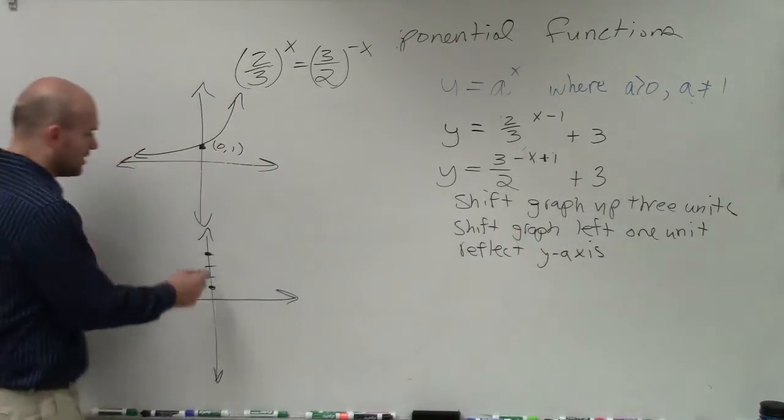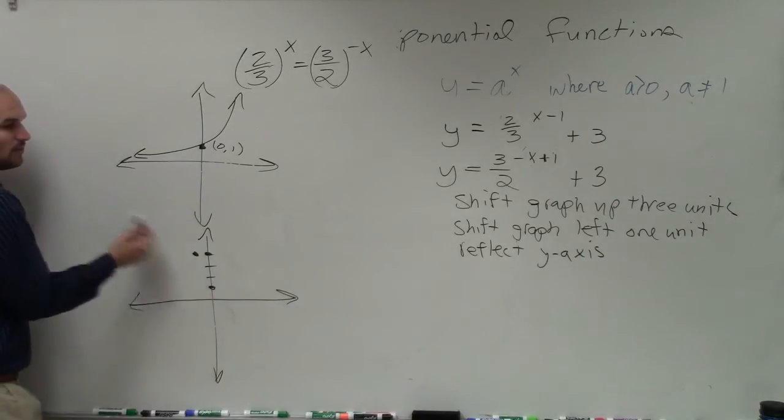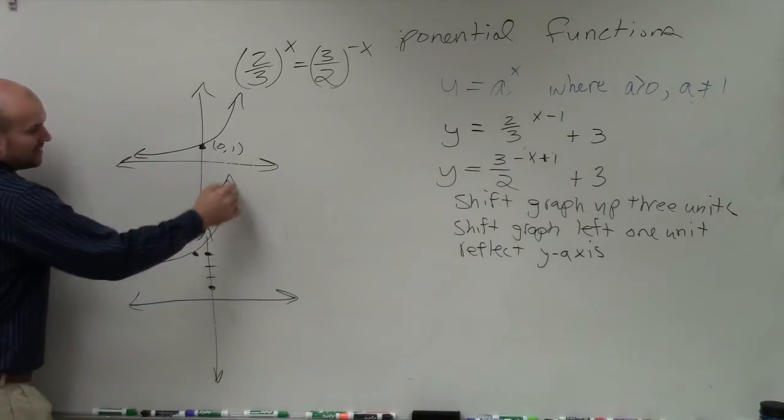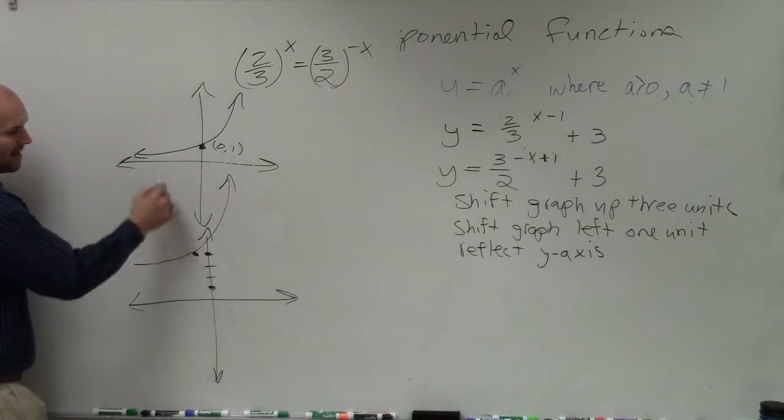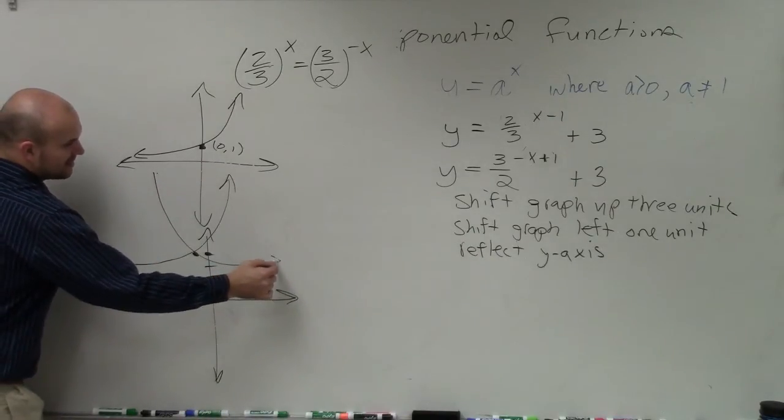Now the graph is going to be shifted one unit to the left. So instead of the y-intercept being at 0 comma 4, it's going to be a different value. But now I'm going to move that point one unit to the left. And then instead of the graph looking something like this, I'm reflecting it over the y-axis. So now it's going to look something like that.